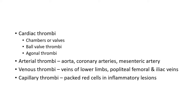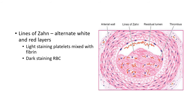There is something called agonal thrombi, which is a bit different. Agonal thrombi are thrombi formed shortly before death, occurring in the ventricles — either one or both. Coming to arterial thrombi, the common sites include the aorta, coronary arteries, and mesenteric artery. Venous thrombi mainly occur in the veins of the lower limb. Capillary thrombi are minute thrombi composed mainly of packed red cells, seen mostly in inflammatory conditions.